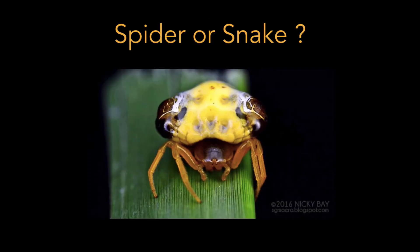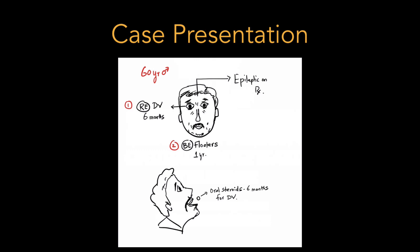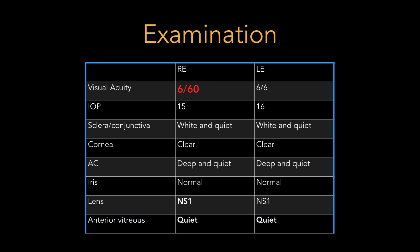Now, what we see is not always what it actually is. In this picture, is it a spider or is it a snake? The difference in identity makes a huge impact on how we treat our patients. Our patient is a 60-year-old male presenting with defective vision in his right eye for the past 6 months and floaters in both eyes for the past 1 year. He is on oral steroids for 6 months for defective vision, prescribed by the local ophthalmologist. His systemic history reveals he is non-epileptic and on treatment for the same for the past 1 year.